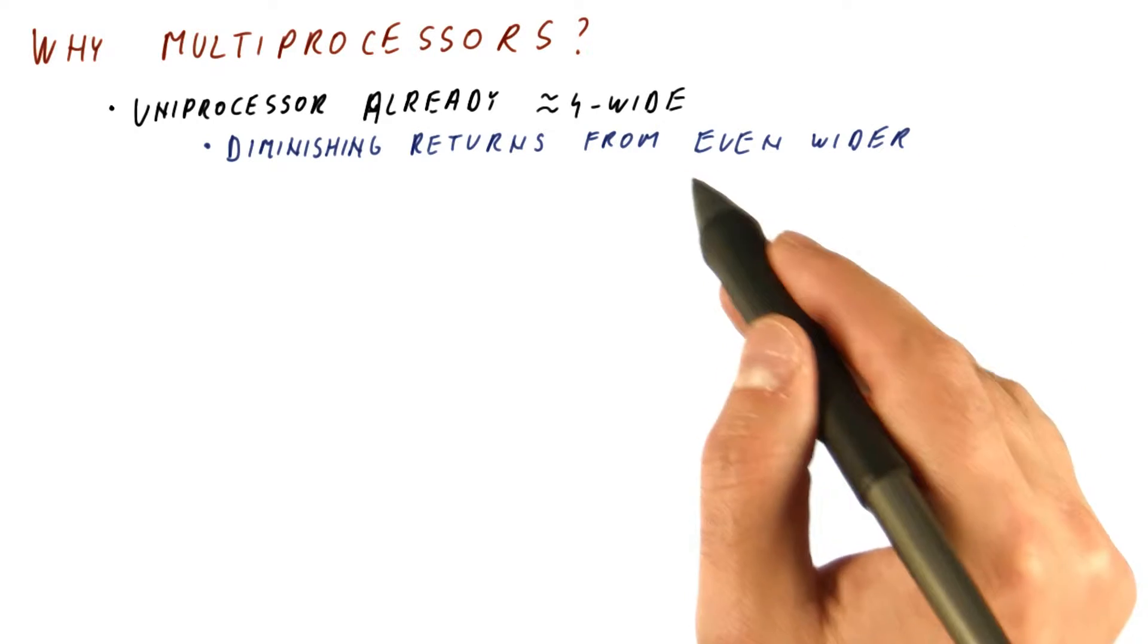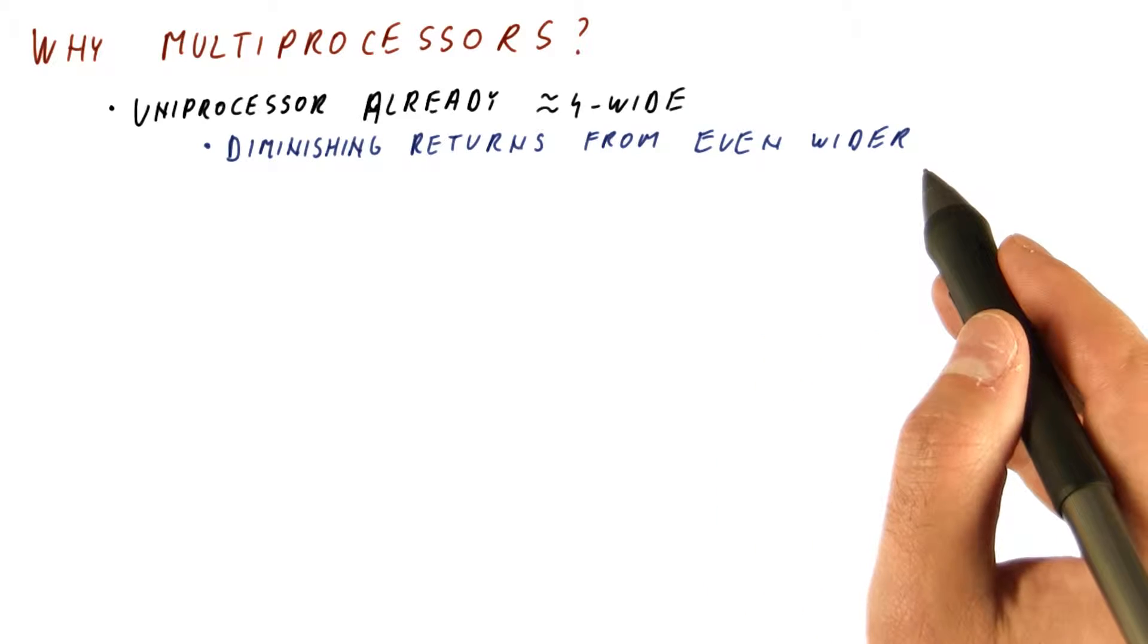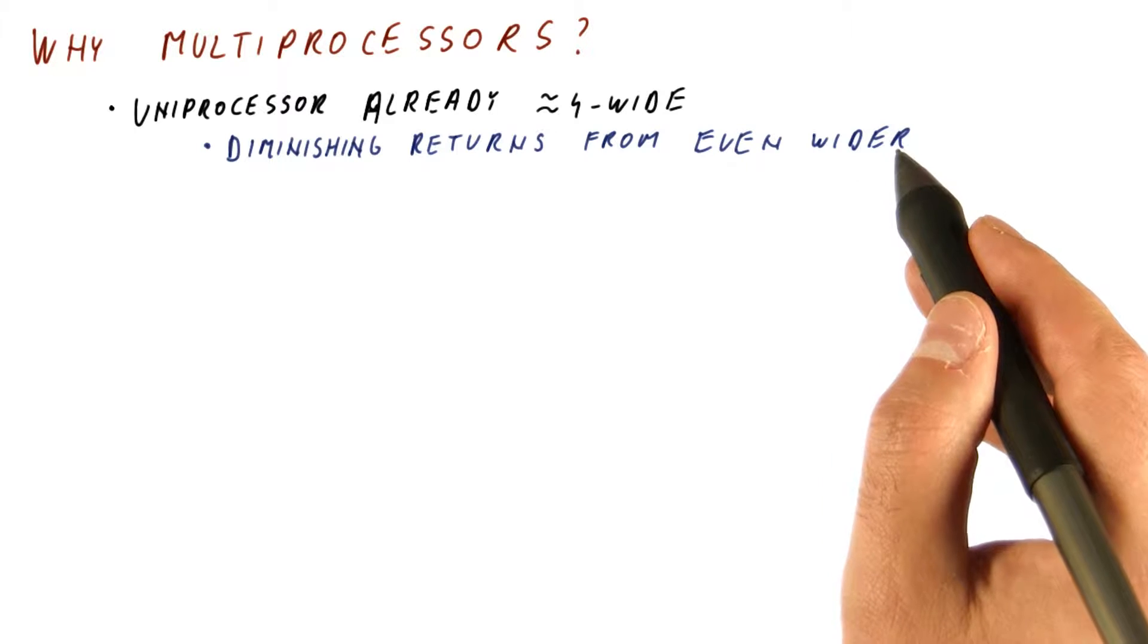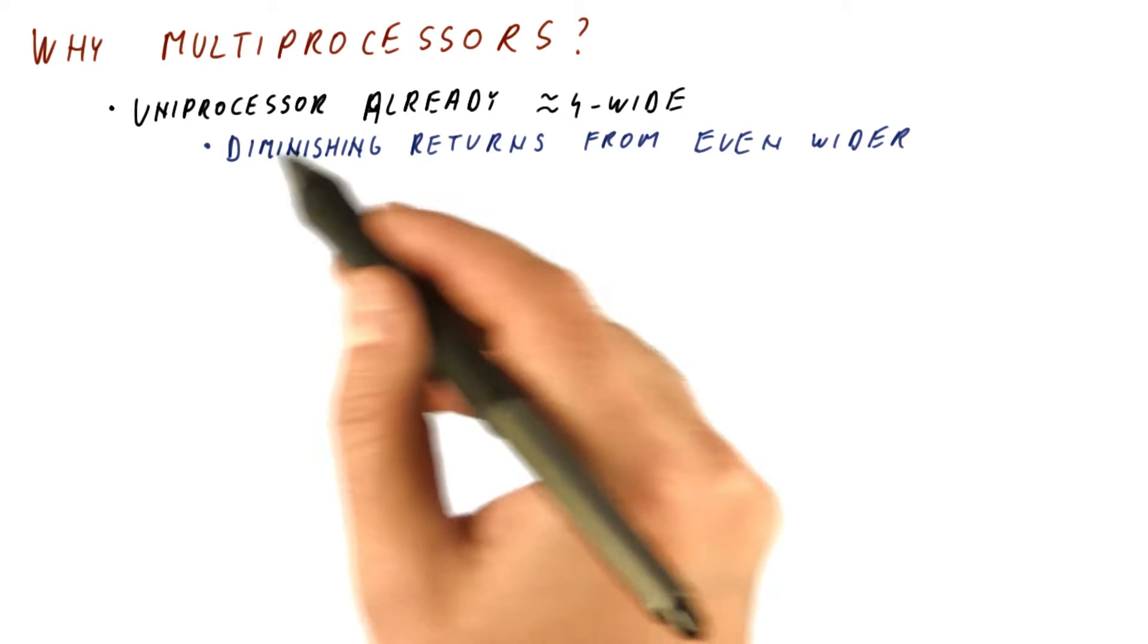You can make it execute, let's say, six or eight instructions per cycle, but you don't get as much from that extension as you did from, for example, making it from two to four wide. And that's because we get diminishing returns.